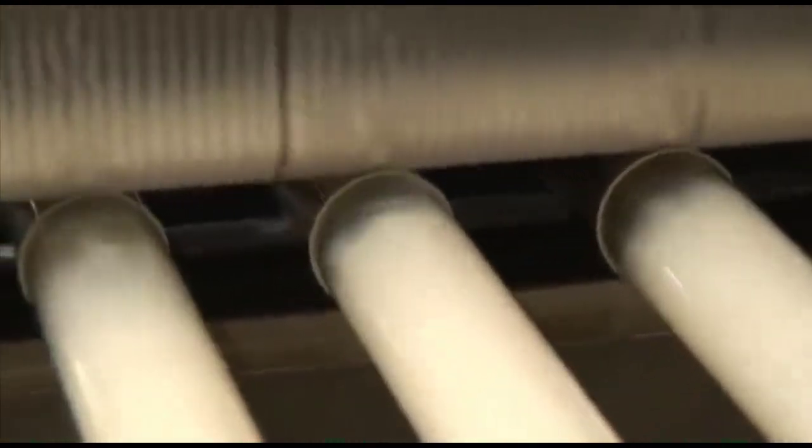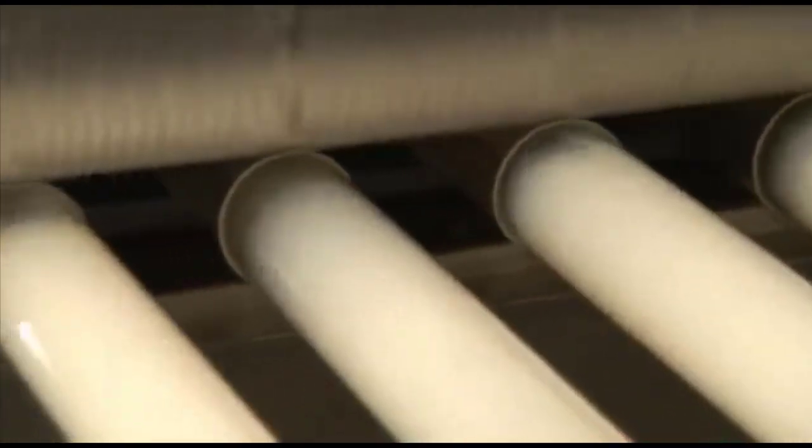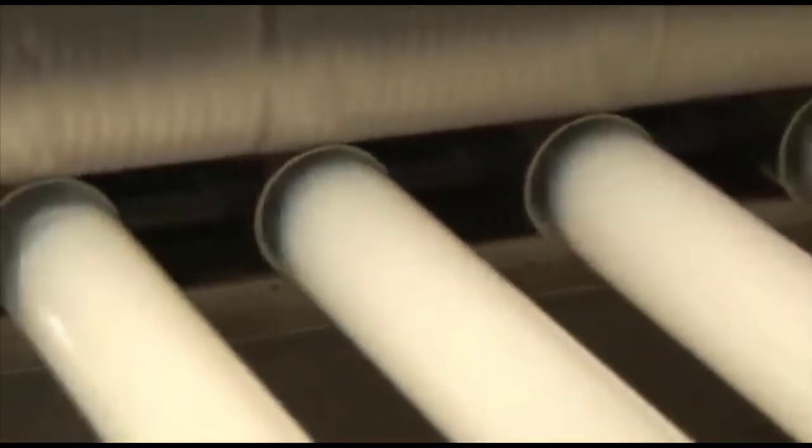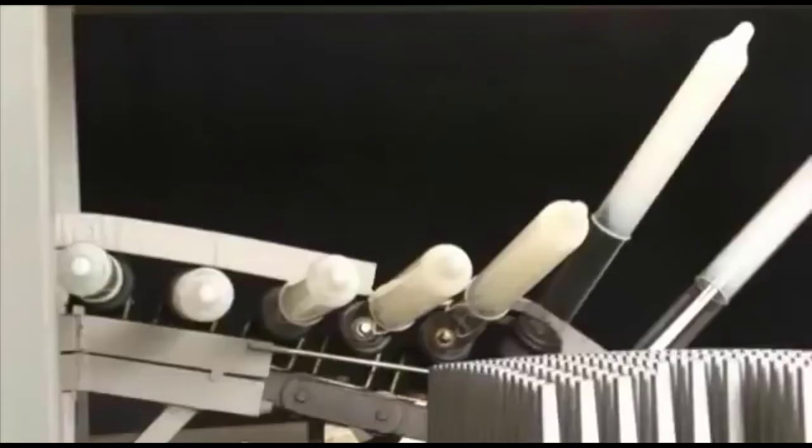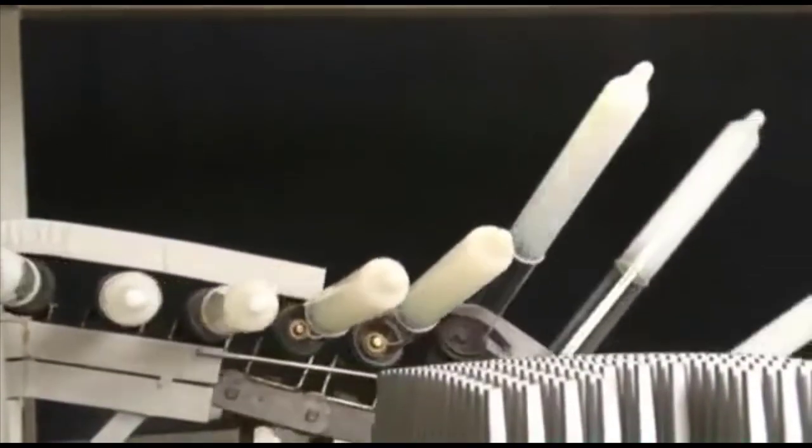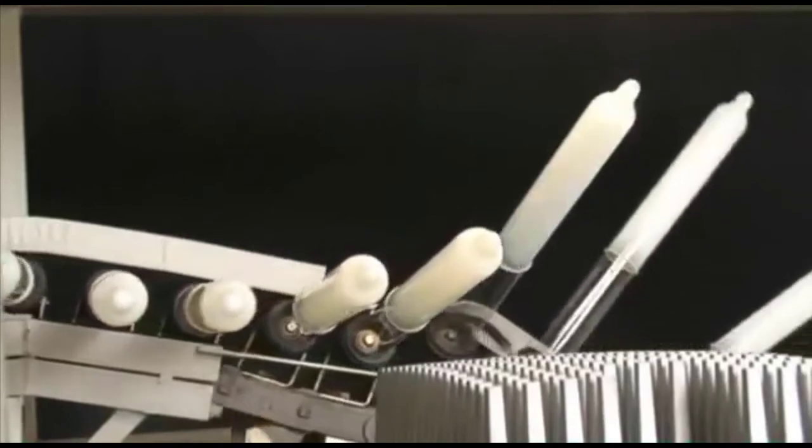Another important processing stage of condom production is the creation of the rolling rim. For this, every condom is given a rim at the open end of the former that can be rolled down. A final drying process called vulcanization makes sure the condom has the required elasticity.